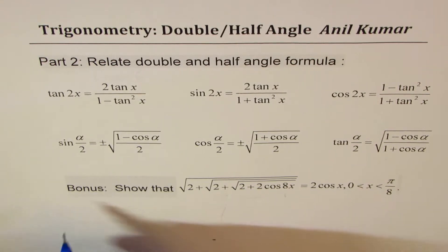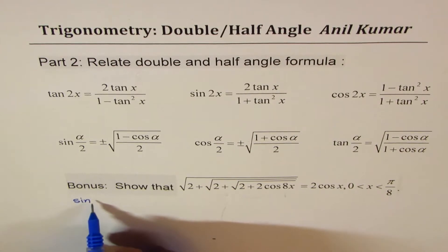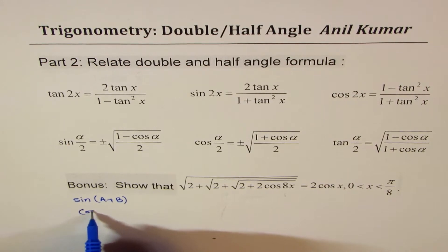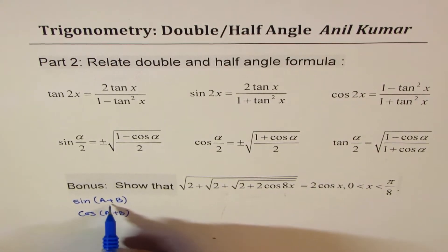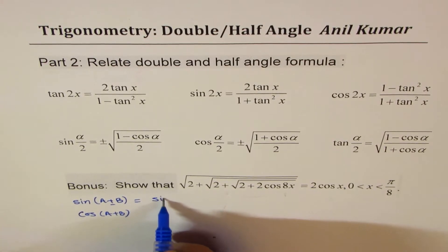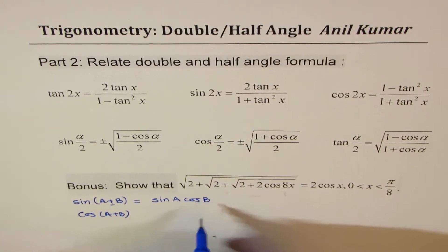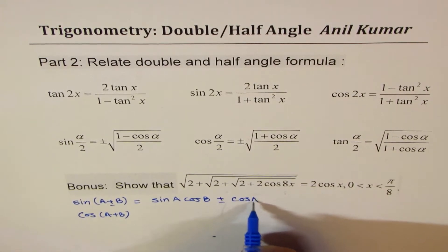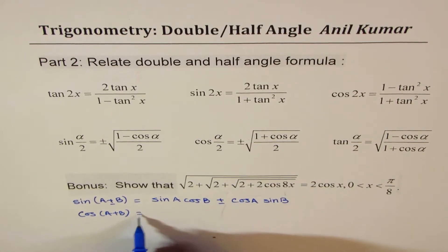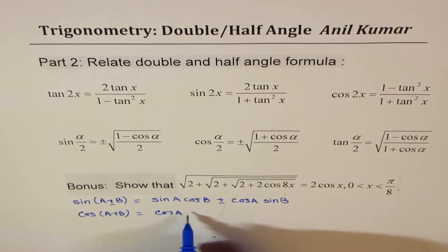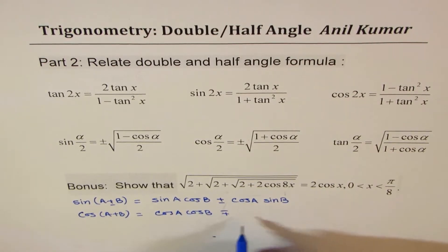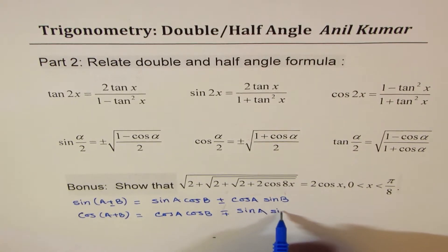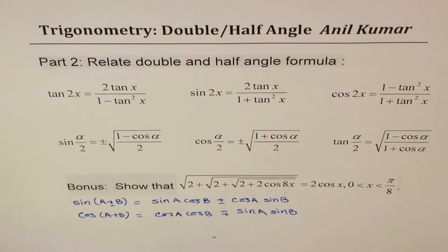Let me remind you: in part 1, we began with compound angle formulas — sin(a+b) and cos(a+b). As you know, sin(a±b) can be written as sin a cos b plus or minus cos a sin b. And cos(a+b) is cos a cos b minus plus sin a sin b.